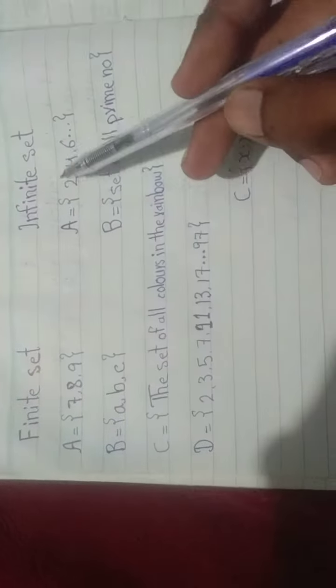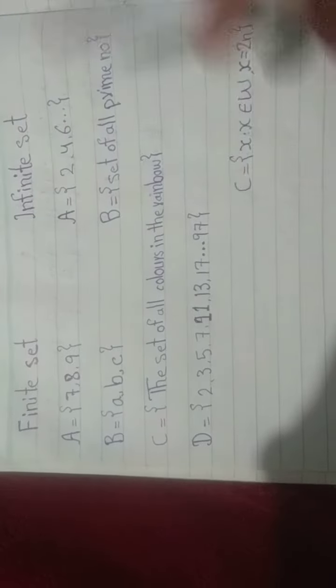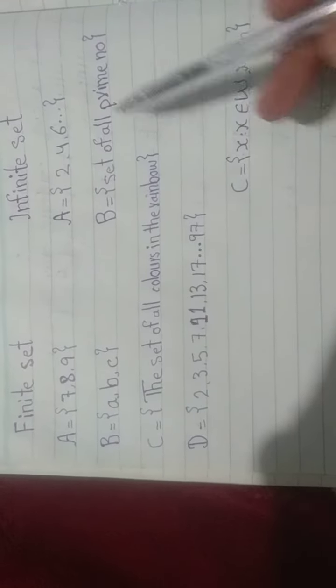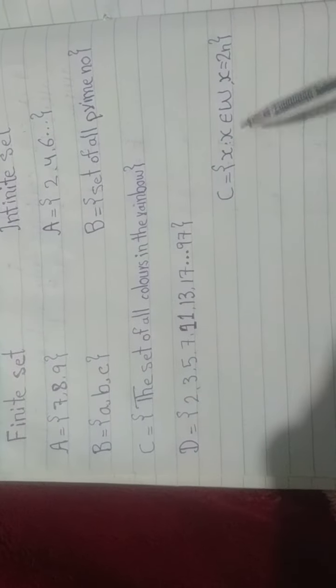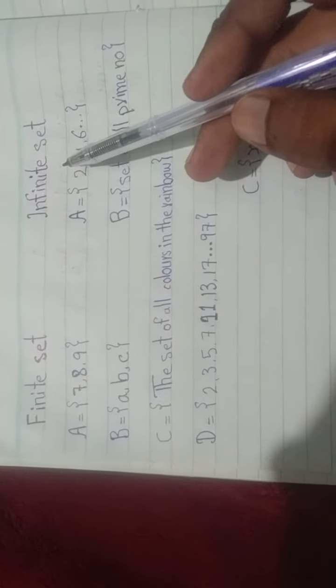Infinite set: Set A contains {2, 4, 6, ...}. Set B contains the set of all prime numbers - this is unlimited. Set C contains {x | x belongs to whole numbers, x = 2n}. That is said to be an infinite set.